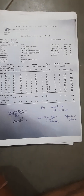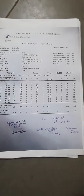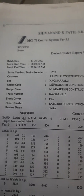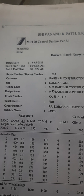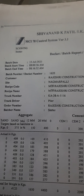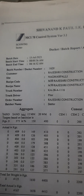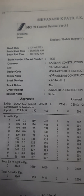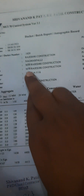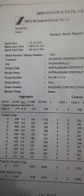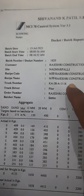The first thing you have to do whenever the RMC reaches the site is check the batch time and the batch end time. Here the batch time is 8 o'clock and batch end time is 16 minutes. The next thing to look for is what grade you have received — here you can see the grade is M35.